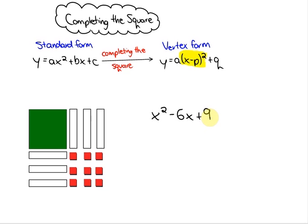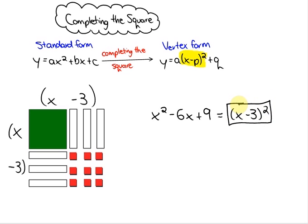When we factored this we noticed or created an area with it. We noticed that this is x minus 3 times x minus 3. Or in other words x squared minus 6x plus 9 is equivalent to x minus 3 squared. This here is considered a completed square.